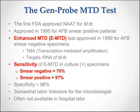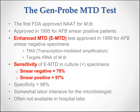Let's start with the Genprobe MTD test. This was the first FDA-approved NAT for Mycobacterium Tuberculosis, approved way back in 1995 — that's why I said 20 years — for AFB smear-positive patients. In 1999, an enhanced MTD test was approved by the FDA for use in AFB smear-negative specimens as well. The MTD test is a transcription-mediated amplification that targets the ribosomal RNA of MTB, of which there's about a thousand copies in every mycobacterium. The sensitivity in culture-positive specimens is quite good: approximately 70 percent for smear-negative and 97 percent for smear-positive specimens. The specificity is 98 percent, so almost 100 percent.